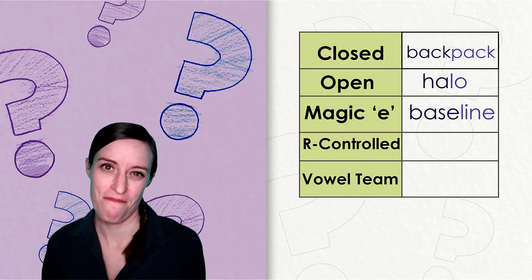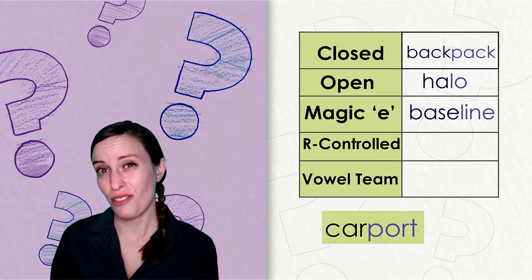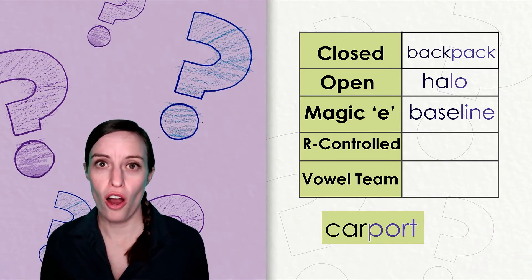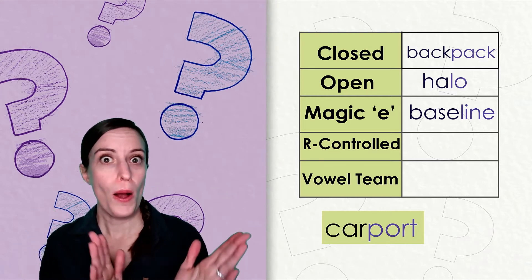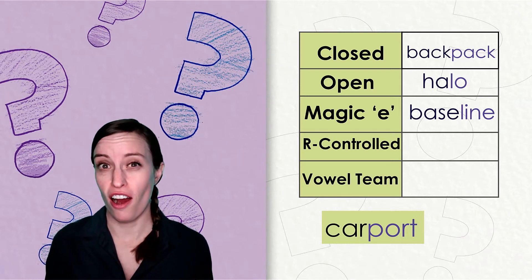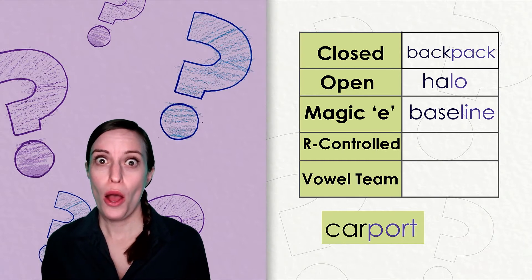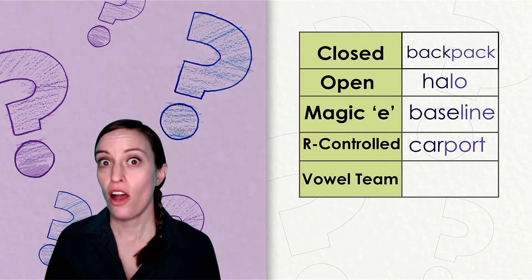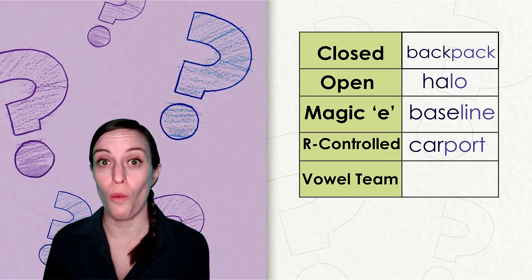They are magic e syllables. Each one of the syllables has a magic e at the end that is telling the vowel to say its name. The next word is carport. That's a shelter or a roof you can park your car under to keep it safe from the weather. Carport has two syllables. Clap it out: car-port. What kind of syllables are car and port?